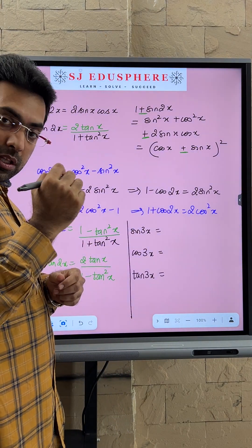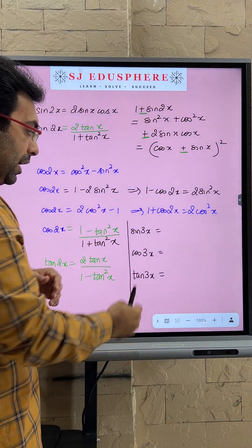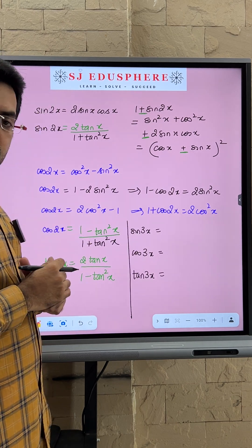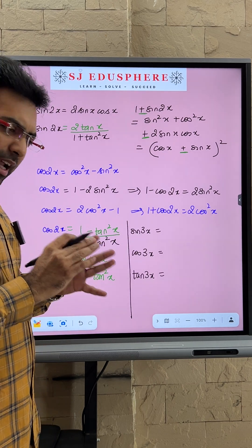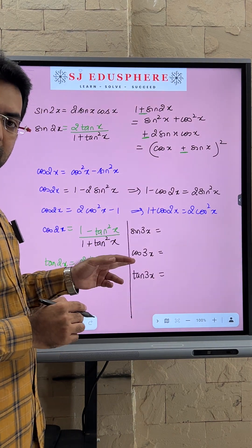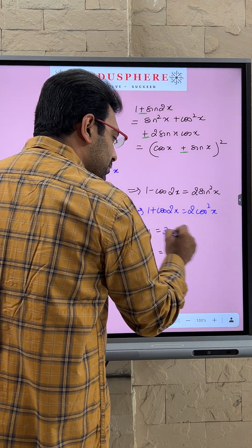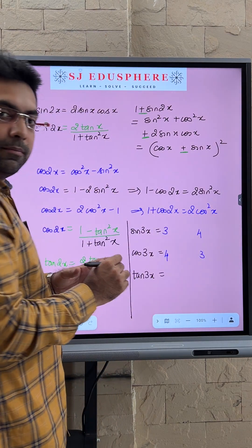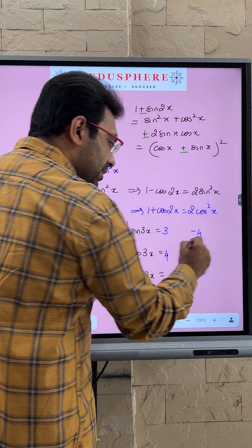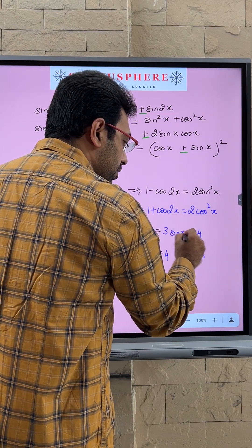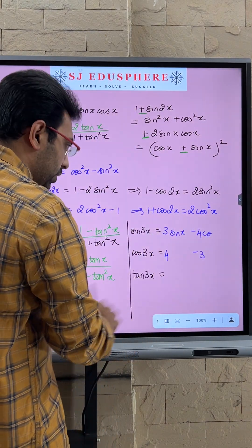Well, let us derive the formula for sine 3x, cos 3x, and tan 3x in a very simple way. Can I say first comes sine, then comes cos. First comes the number 34, then comes the number 43. Both will have minus. Sin will have only sin, cos will have only cos.